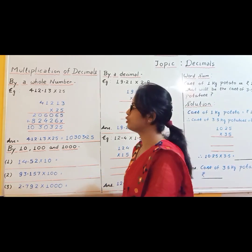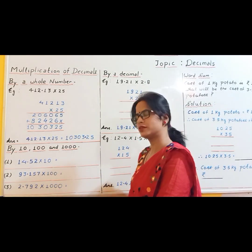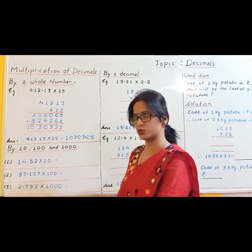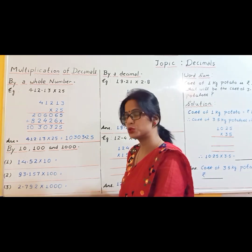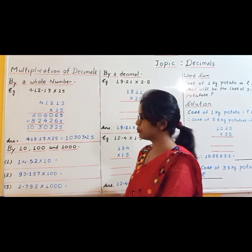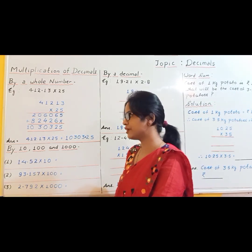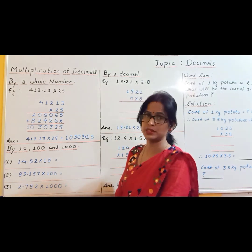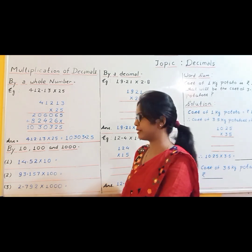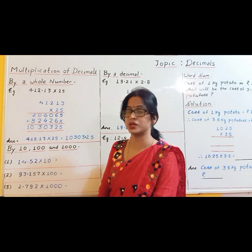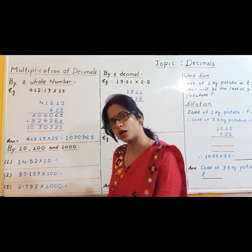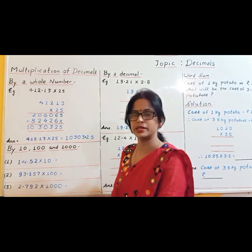Now, multiplication of a decimal by 10, 100, or 1000. When a decimal is multiplied by 10, 100, or 1000, the decimal point is shifted to the right-hand side according to the number of zeros. If multiplied by 10, the decimal shifts right by one place; by 100, it shifts right by two places; and by 1000, it shifts right by three places.